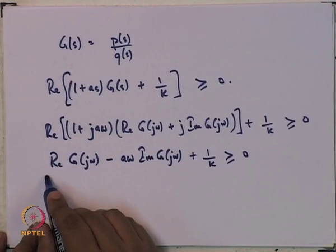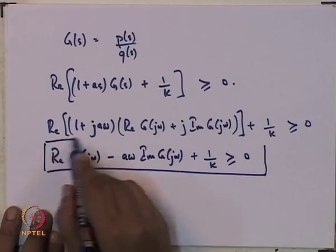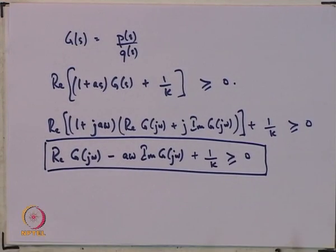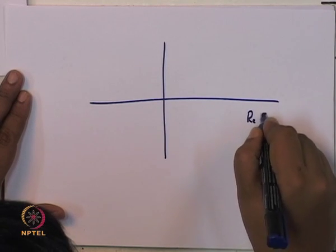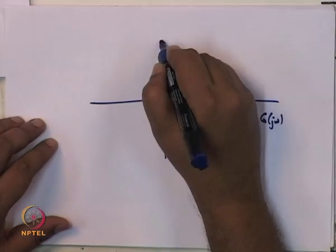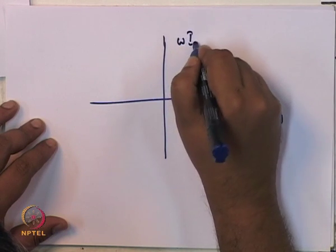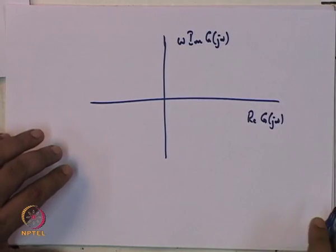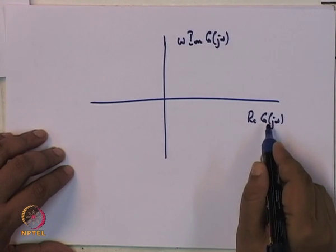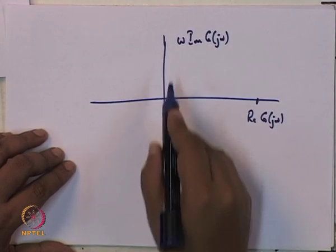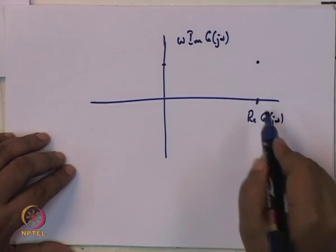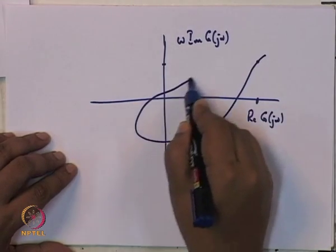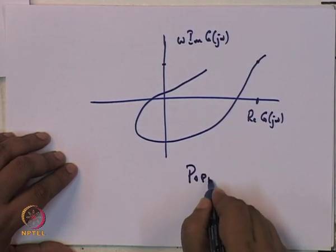To check this condition for a given transfer function, we make the following plot: on the x-axis, plot Re[G(jω)], and on the y-axis, plot ω · Im[G(jω)]. At each ω, evaluate these two quantities and plot the resulting point. Such a plot is called the Popov plot.